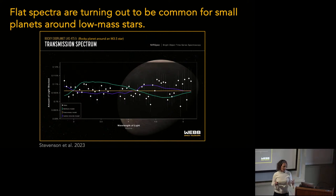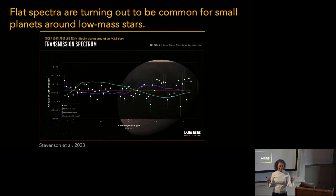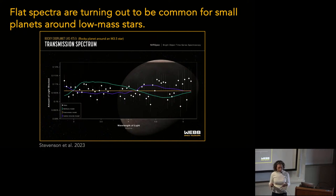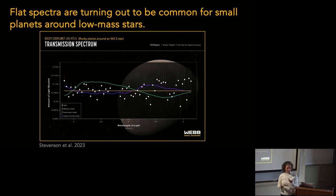In the last little while with all these new JWST spectra, small planets around low-mass stars tend to be showing up as flat spectra, which are completely consistent with no atmosphere. This is very disappointing, perhaps, but also really important because it's giving us the context in which we need to understand the entire distribution of planet atmospheres. Maybe it is possible that all these atmospheres are being evaporated and destroyed by their central star.